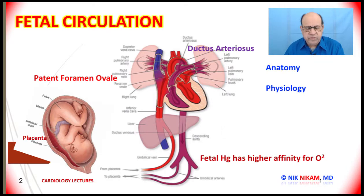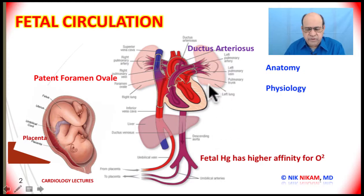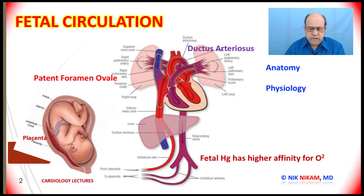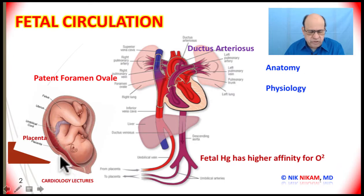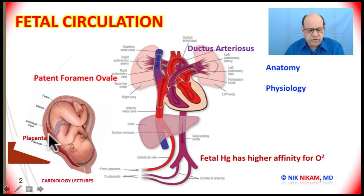The fetal circulatory system is different from that of adults in that the lungs do not function like they do in adults in terms of oxygen and carbon dioxide exchange. The lungs are in a collapsed state. The function of the lungs is taken up by the mother's placenta, which acts as the site for oxygenation of the fetus's mixed venous blood.